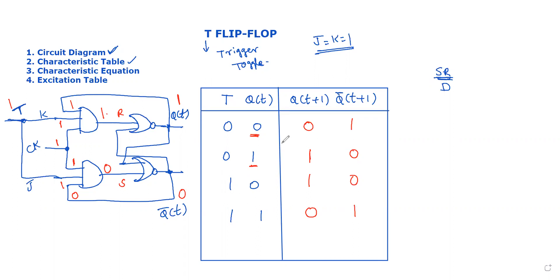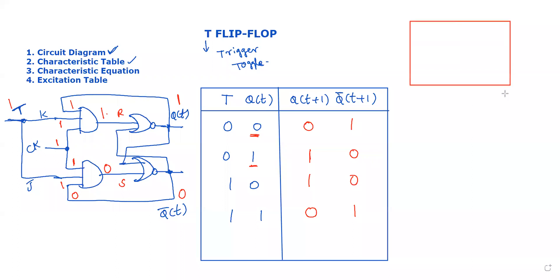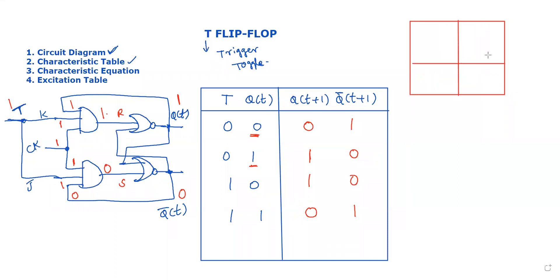Next is the characteristic equation. We have two variables — T and Q(t). Using a K-map with two variables T and Q(t), we derive the characteristic equation.